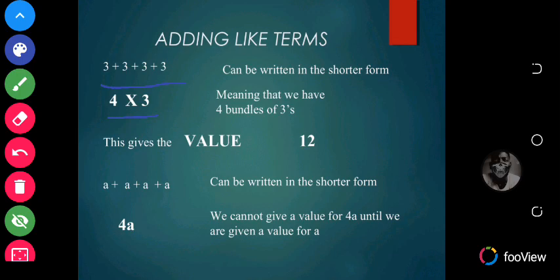So 4 times 3 is the same as 3 plus 3 plus 3 plus 3. We have 4 threes, so we multiply 3 by 4 and the value is 12. Hence when we have a plus a plus a plus a, it can also be written as 4 times a, because there are 4 a's, so you just multiply 4 by a.